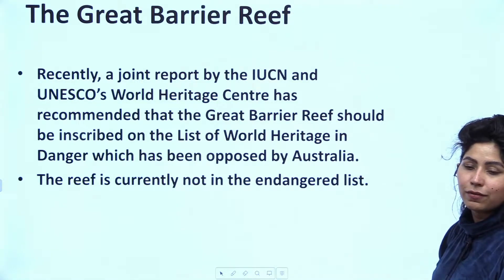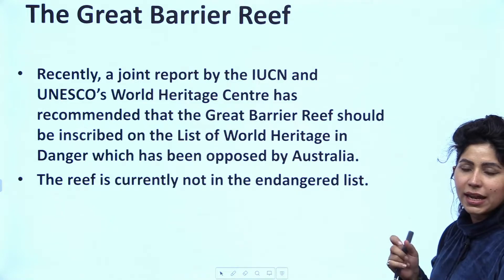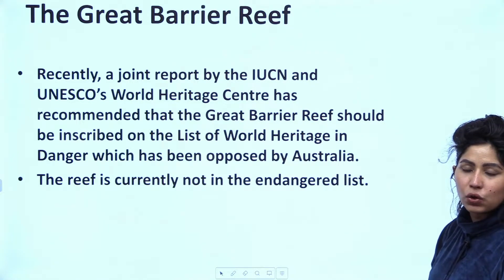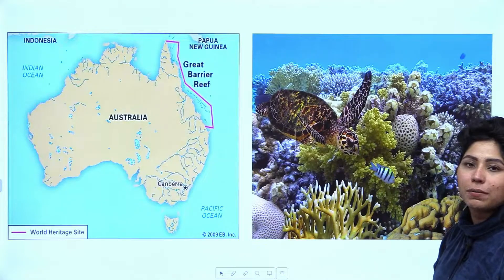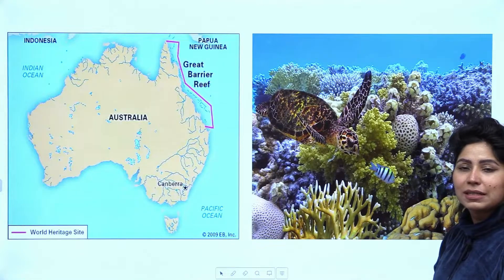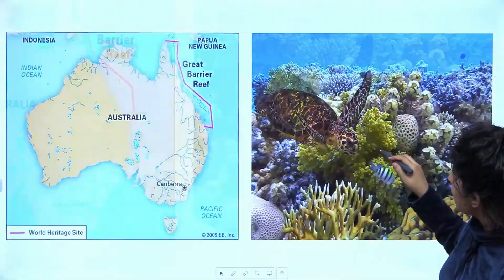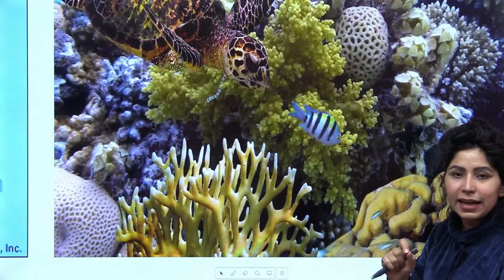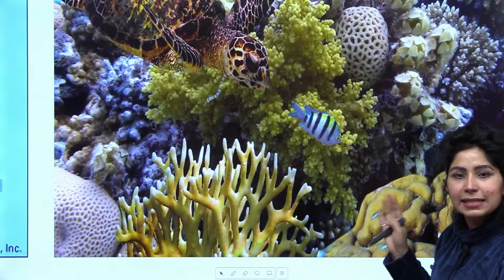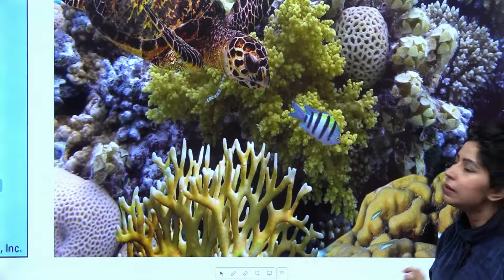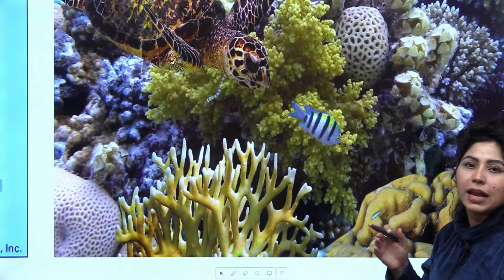The reef is currently not on the endangered list. Any UN World Heritage can be put on the endangered list as well. Australia was putting a lot of efforts to protect this Great Barrier Reef because this is heritage for mankind. But still, there is a problem of coral bleaching. Inside these reefs, if you look closely, there is a small algae called zooxanthellae that stays inside the reef in a symbiotic relationship with it.